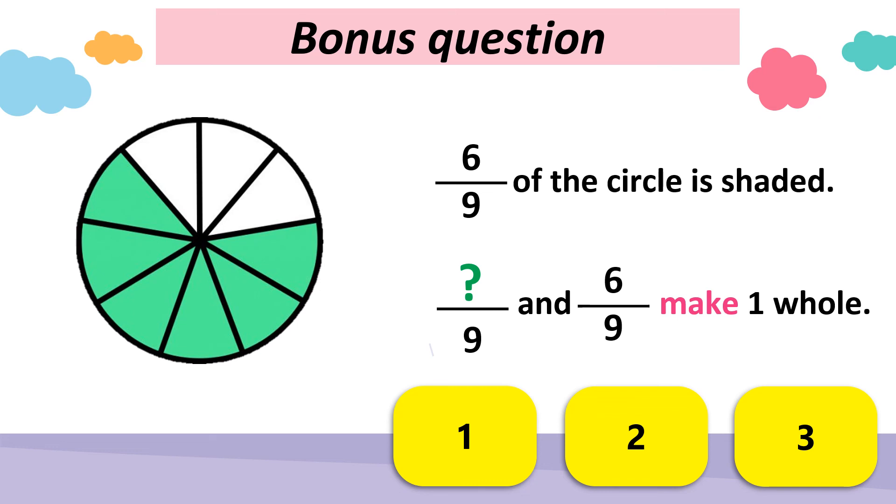It's time for a bonus question. We have six out of nine. One fraction of the circle is shaded. One fraction and six out of nine make one whole. So if you look at the figure, you only need to fill up these one, two, and three parts. So you need to have three out of nine to make one whole. Was that easy?